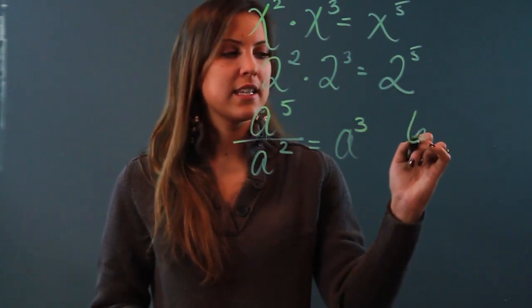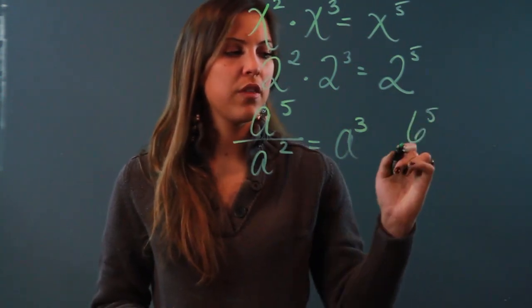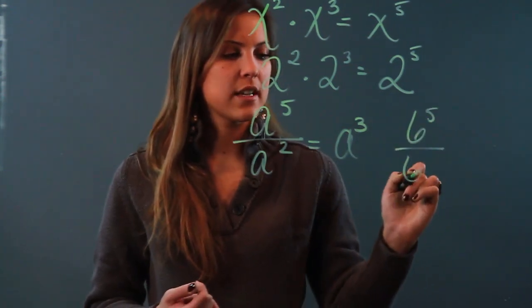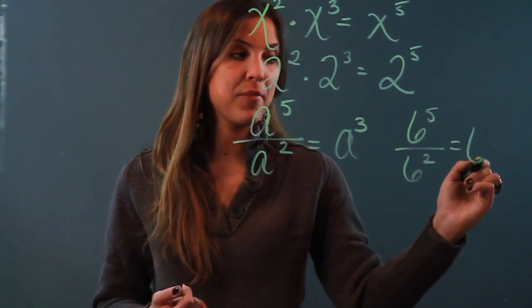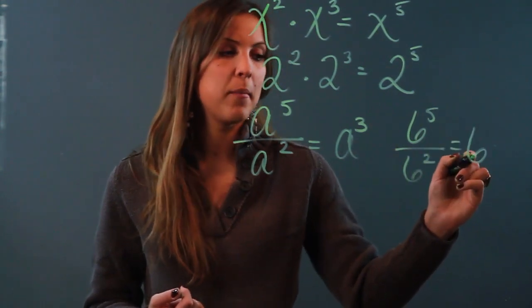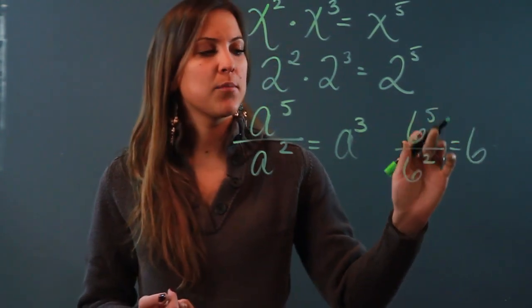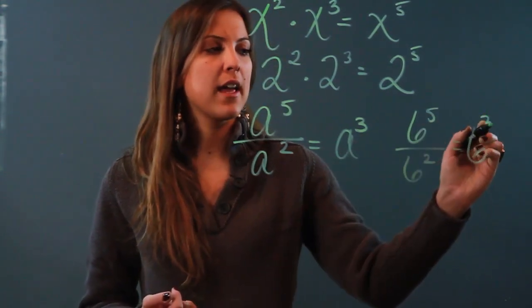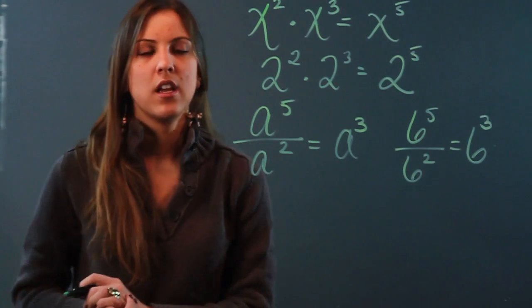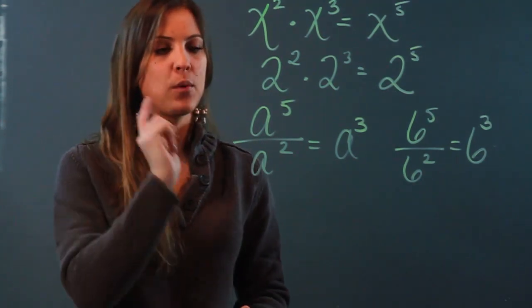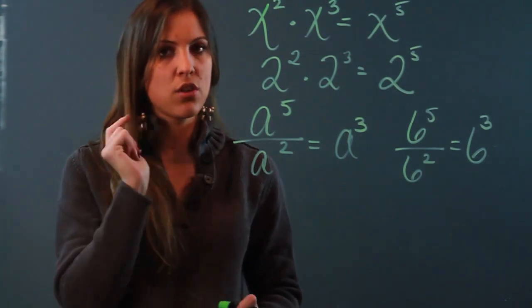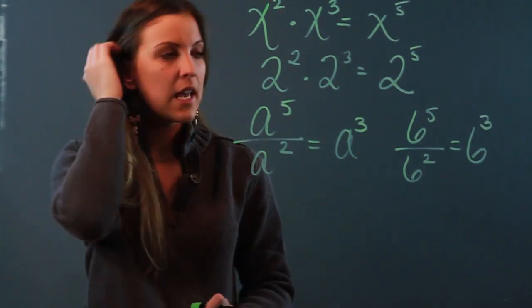The same thing works with numbers. If I had six to the fifth over six squared, my bases are the same, so I keep them — I don't divide them — and I subtract my exponents. So that's the multiplication law of exponents and the division law of exponents.